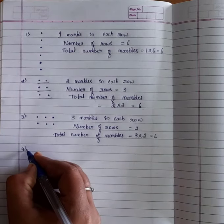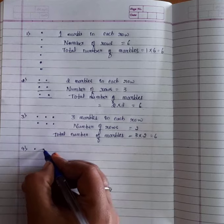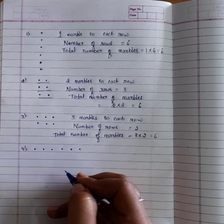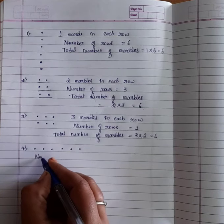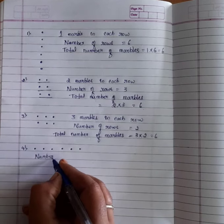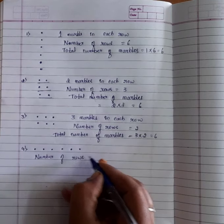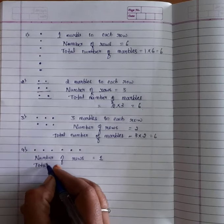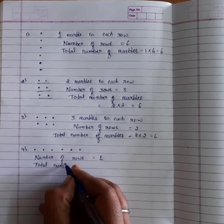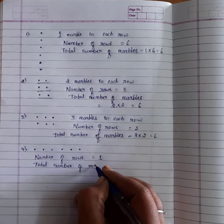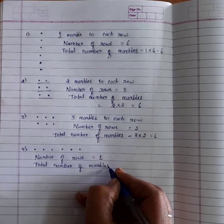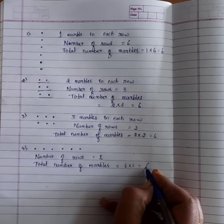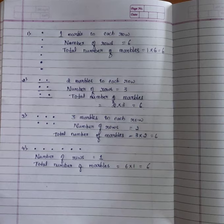He arranged the marbles in the fourth way — 1, 2, 3, 4, 5, 6. Total number of marbles equals 6 into 1, that is 6.